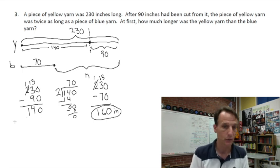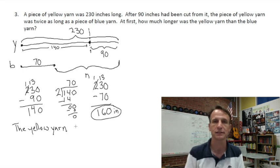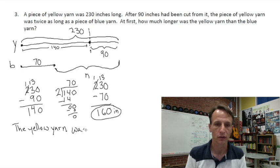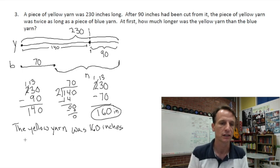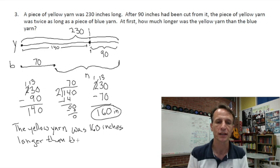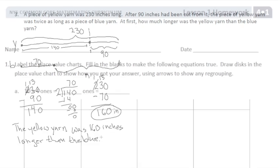So we can write our statement now. The yellow yarn was 160 inches longer than the blue. And there we go. Homework time is over. Have a great time. See you next time on Homework Time.